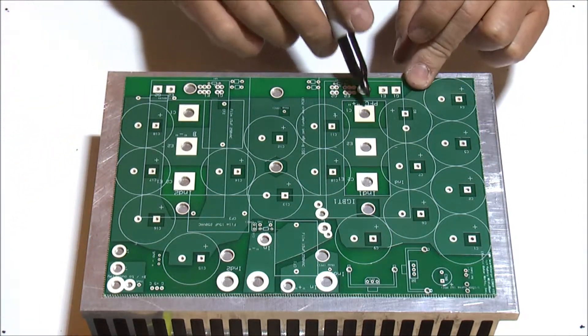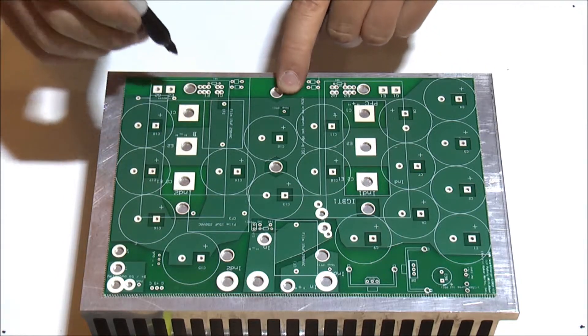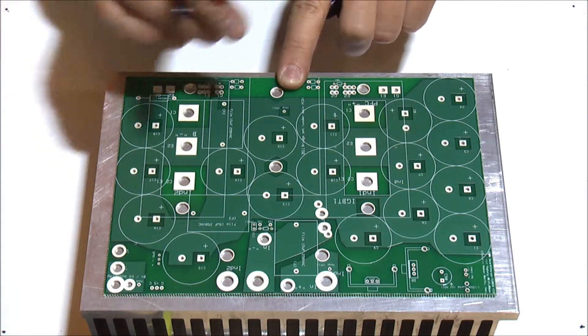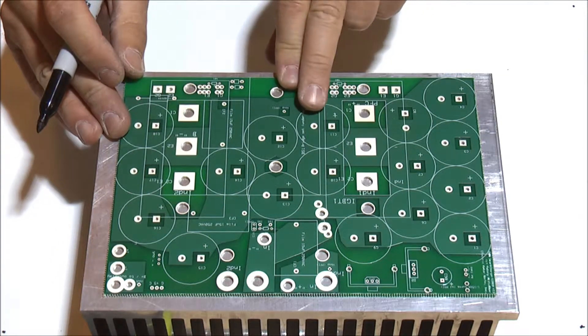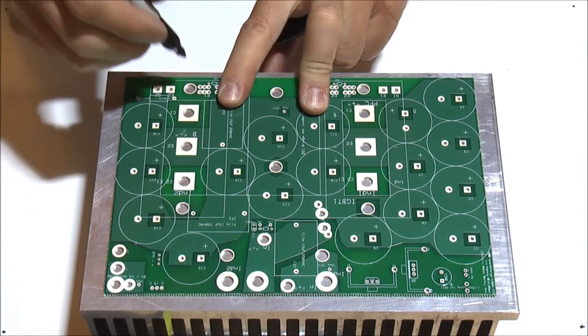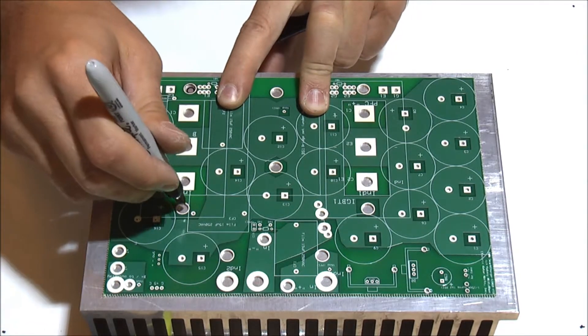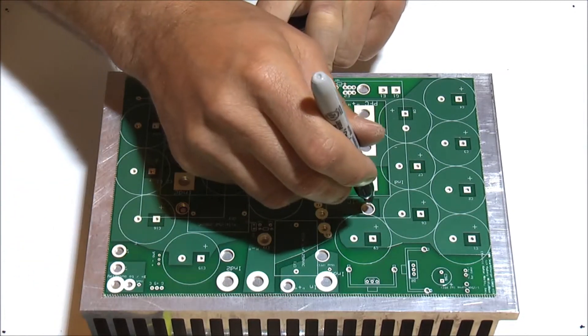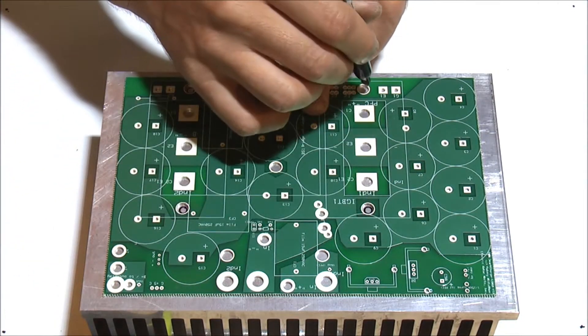The IGBTs are placed in such a way that if you align one of them, the second will be aligned automatically. Once we align that, just do some markings through these holes. These are IGBT mounts.